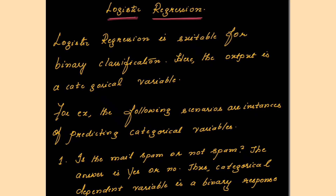Logistic regression works slightly differently. It does not predict continuous values but instead predicts categorical values — that is, binary values. So when it is predicting categorical values, we say it is used for binary classification. Logistic regression is suitable for binary classification.